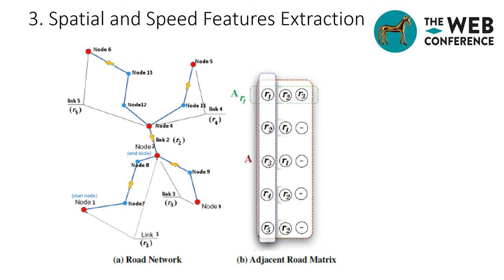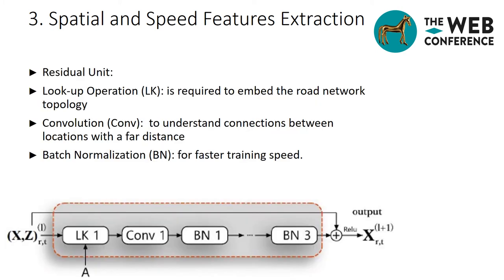To extract spatial features, we consider the road network as a graph, where nodes are the intersections between road segments. This representation allows to model the correlation between road segments and construct the adjacent road matrix A. We then use the residual layers to capture the spatial correlations between energy consumed in each road segment and its adjacent road segment. The residual unit contains three combinations of lookup operation, convolution, and batch normalization. First, we feed the energy and speed matrices X and Z into the residual block. A lookup layer is required to embed the road network topology. A stack of convolutions is used in a single residual unit to understand connections between locations with a far distance. We apply batch normalization after convolution layer for faster training speed.